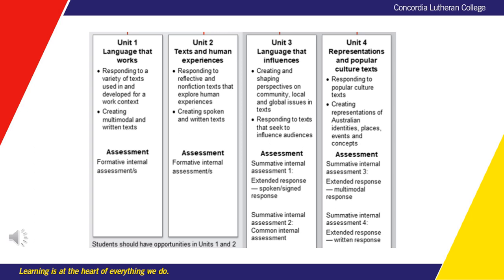There are four units that students study in Essential English and these are all centred on the functional and useful use of language in our community. The units are: Unit 1, Language that Works; Unit 2, Text and Human Experiences; Unit 3, Language that Influences; and Unit 4, Representations and Popular Culture Texts.